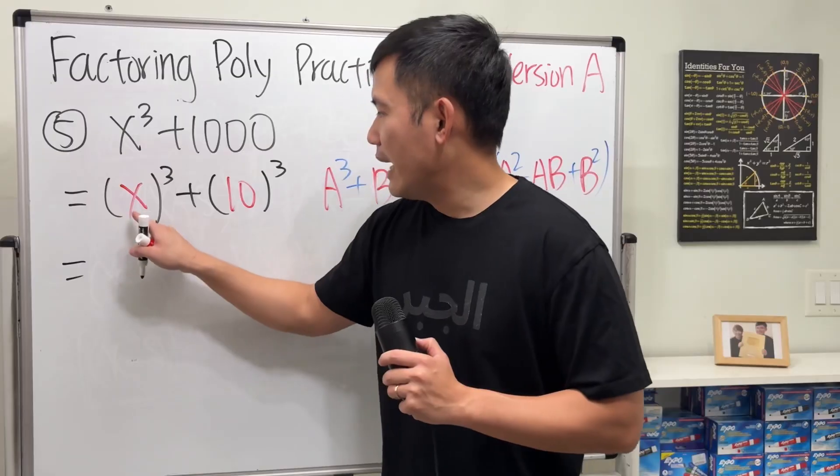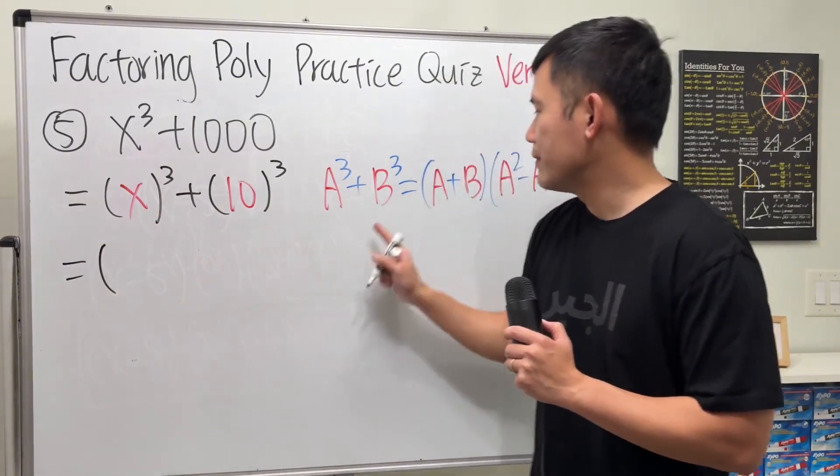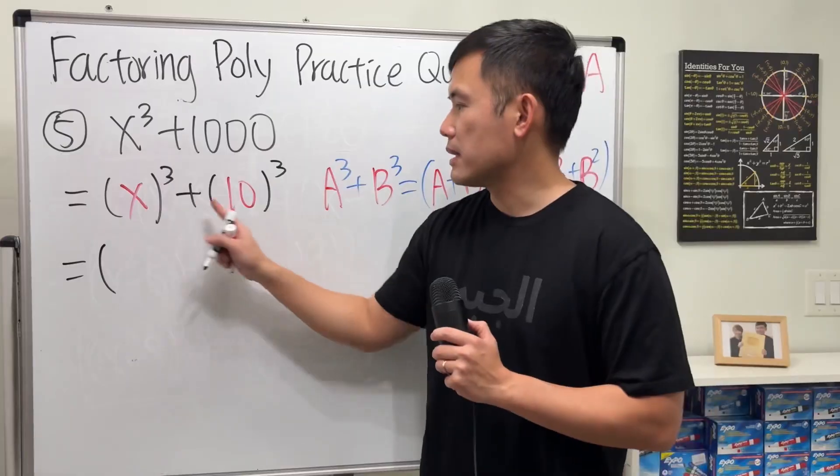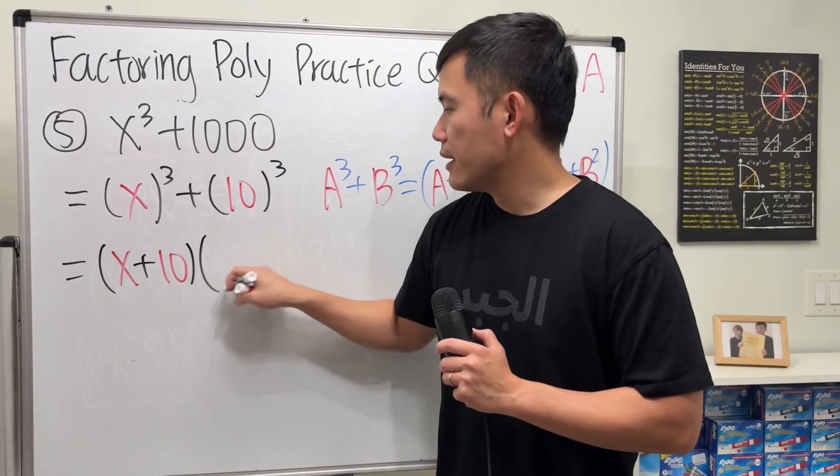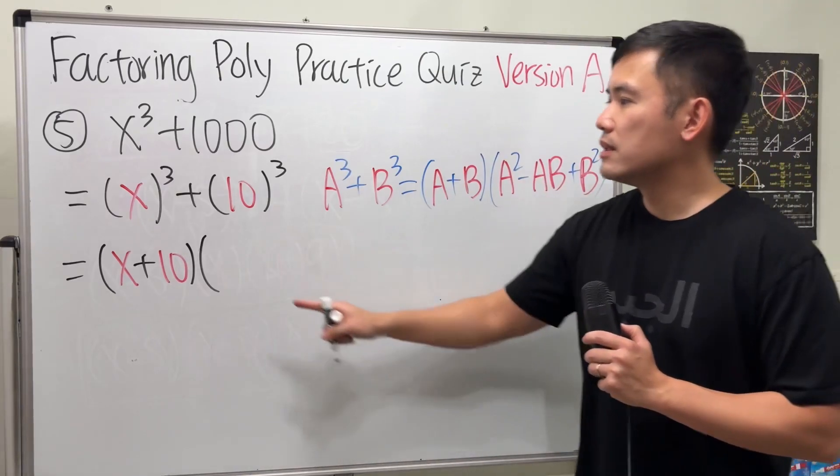So, a is the x, b is the 10, so first we have a plus b, so it's x plus 10. Continue, we have a squared, so that's x squared.